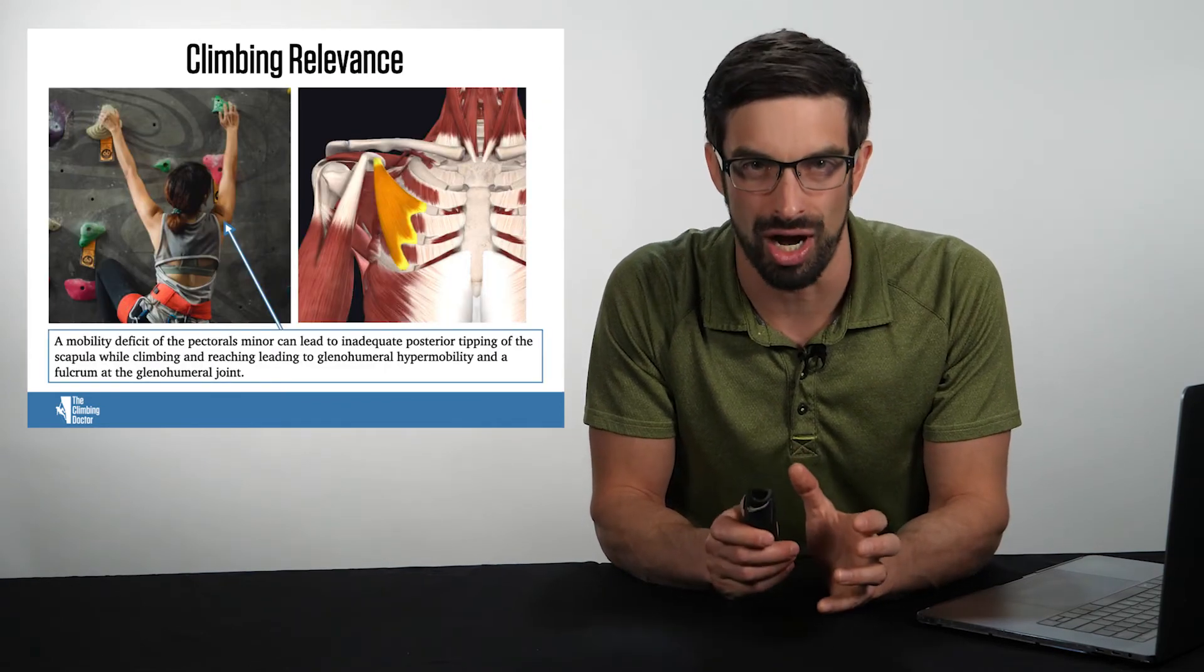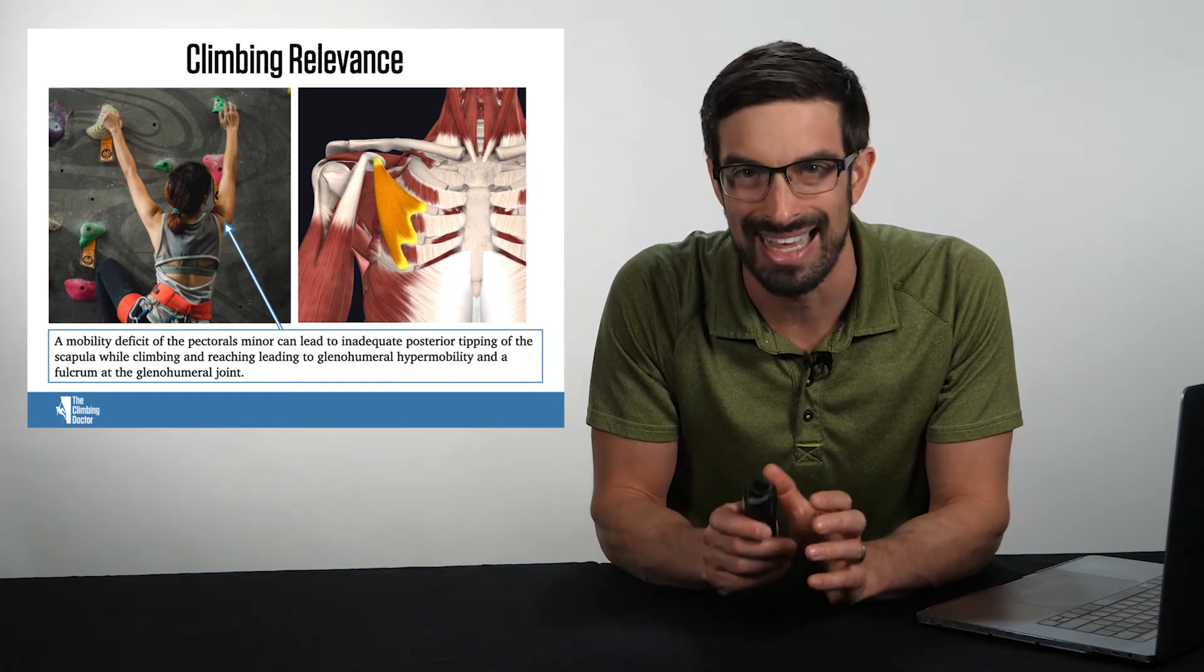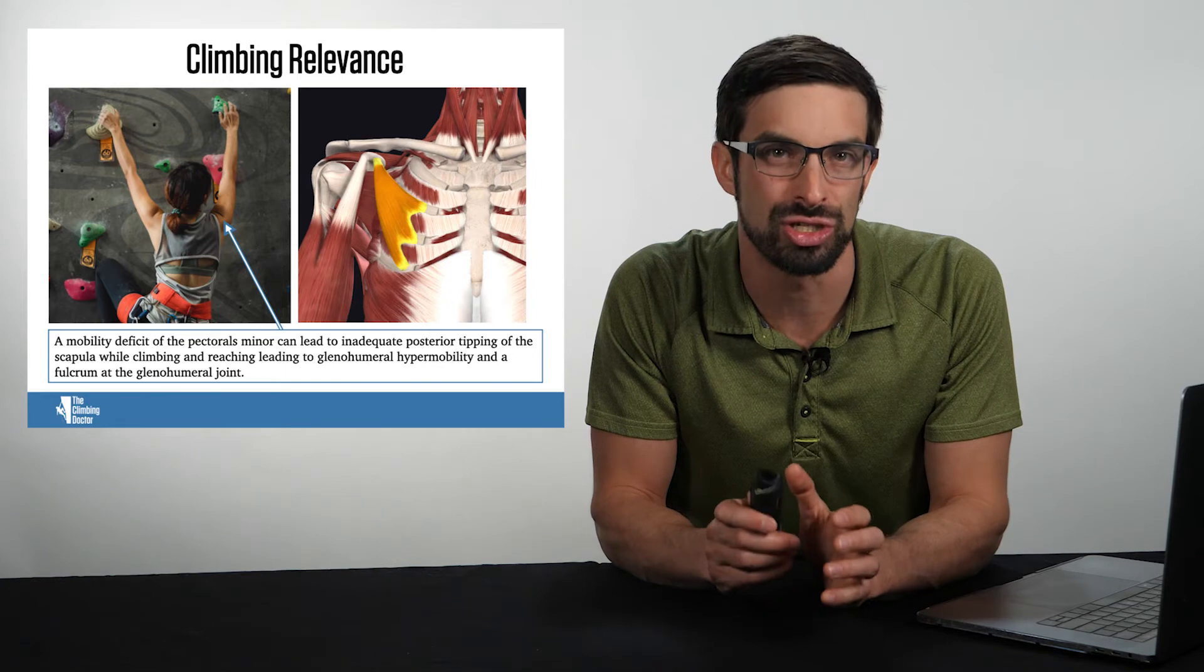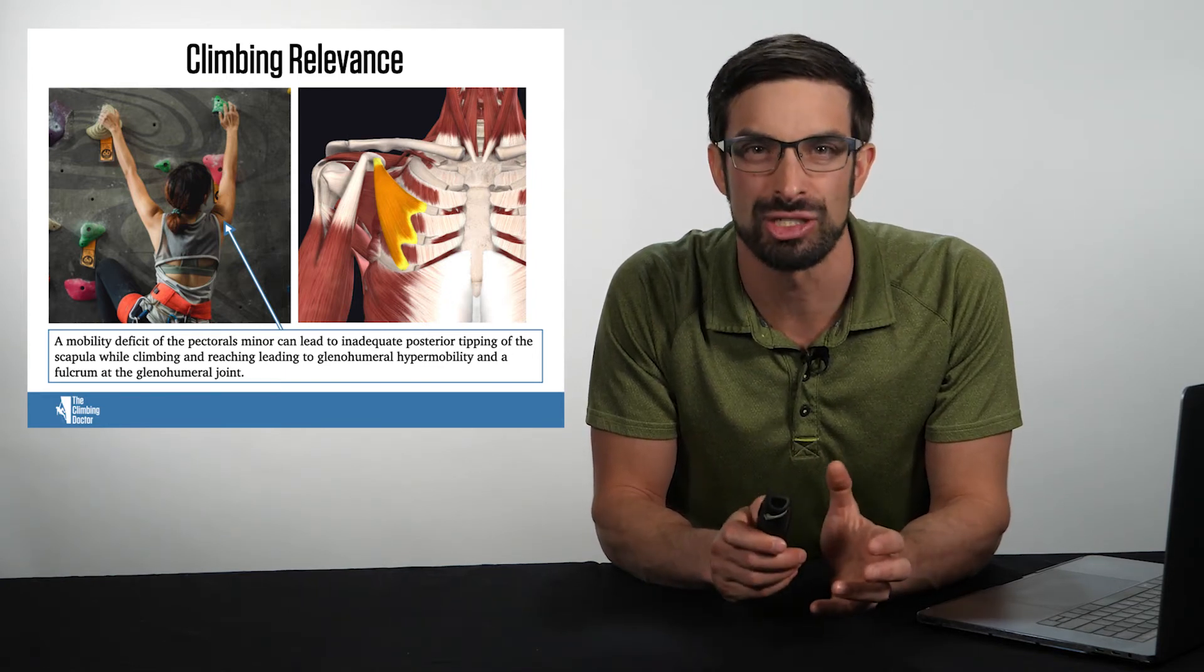So how does this relate to rock climbing? A mobility deficit of the pectoralis minor can lead to inadequate posterior tipping of the scapula while rock climbing, and this occurs oftentimes during reaching.